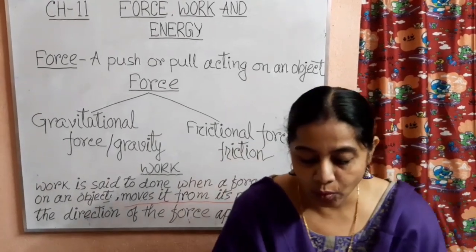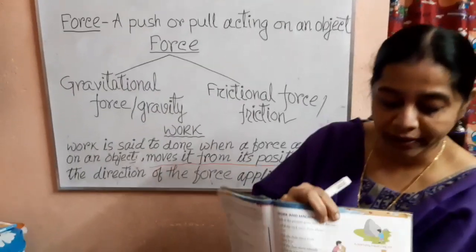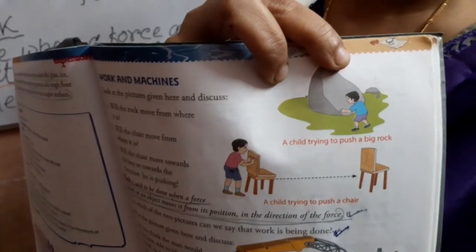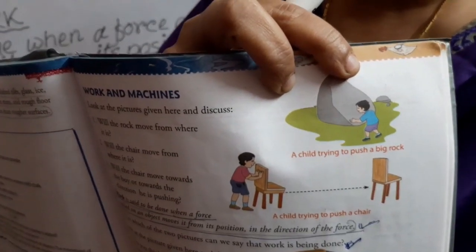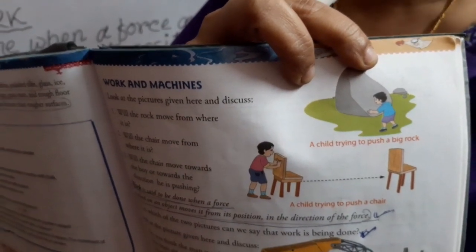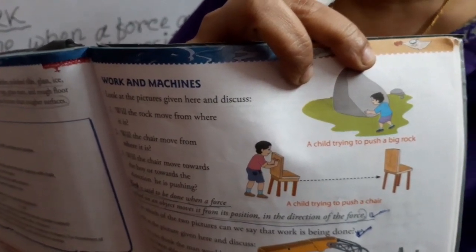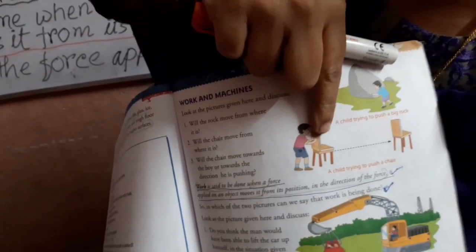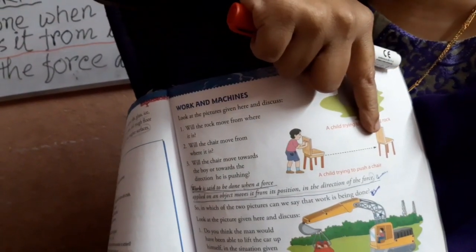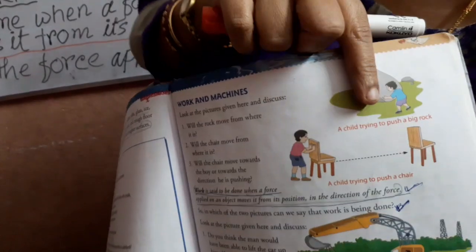Students, in your book you see this boy applying force to move a big rock — but it is not possible for a boy of your age to move this big rock. So work is not done there. But here, the boy is pushing this chair and it is moving towards some distance — then work is said to be done here.